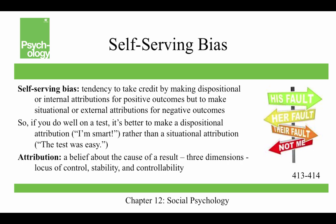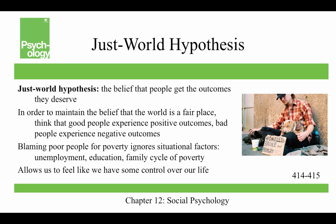Attributions are beliefs about what the cause was, and those have three dimensions: a locus of control, which could be internal or external; the stability, which is stable versus unstable; and the controllability of it, which is controllable or uncontrollable.